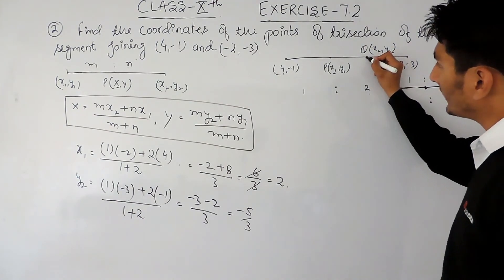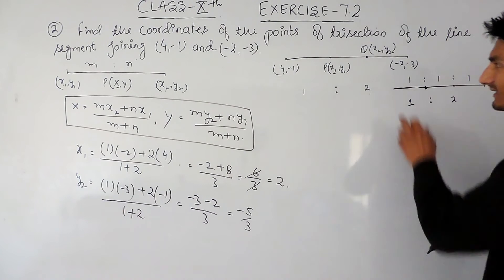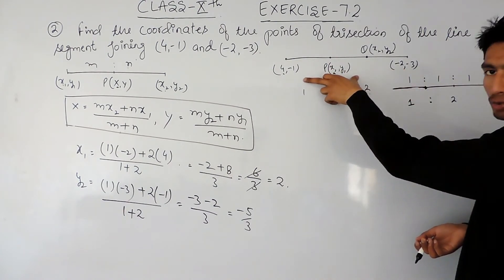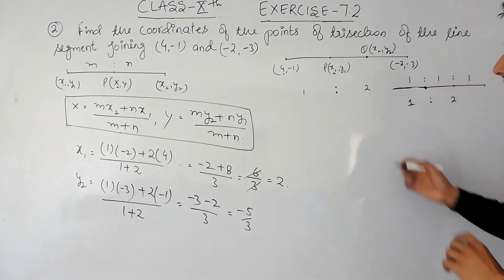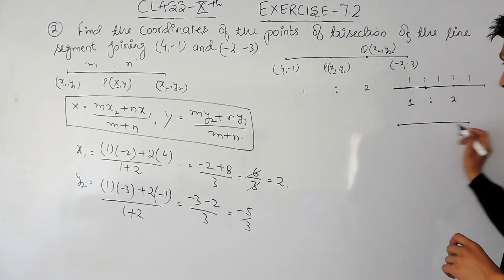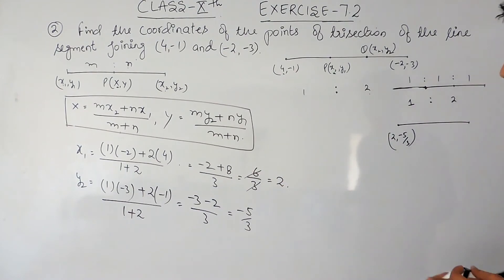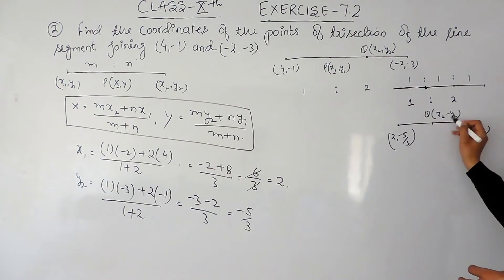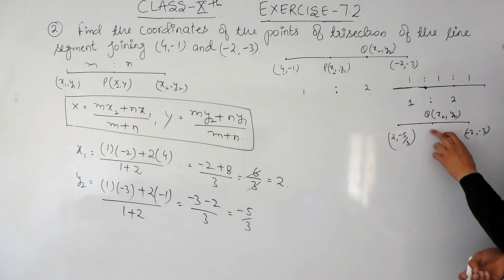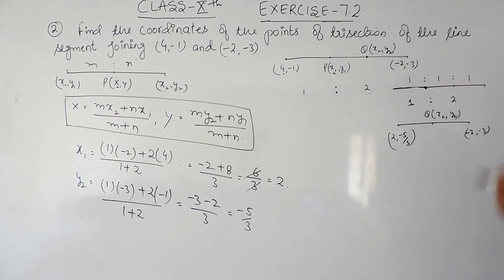Now there are two methods for finding the coordinates of point Q. I can use the section formula again with ratio 2:1 to find the coordinate of Q, or since I already know point P is (2, -5/3) and the endpoint is (-2, -3), I can find the coordinate of Q as the midpoint of P and the endpoint (-2, -3) using the midpoint formula.